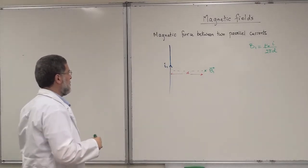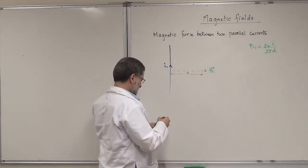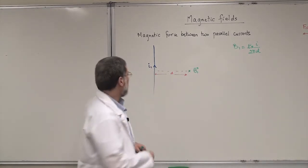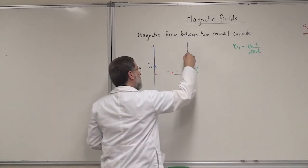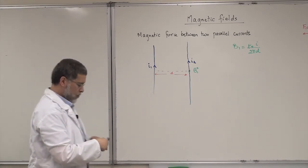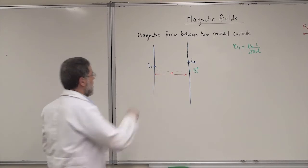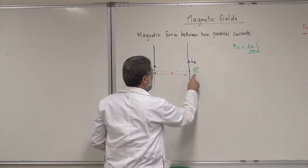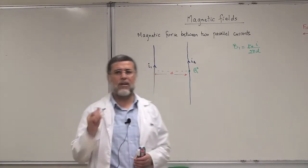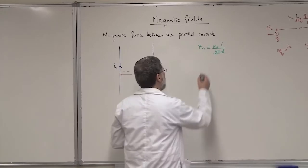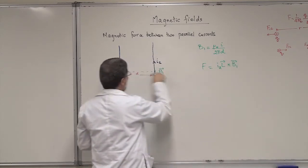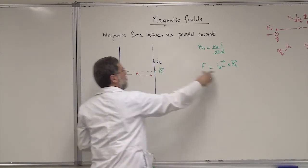Now I'm going to take another wire and place it at that point, with parallel currents — so I pass a current I2 in the same direction. If you recall from previous videos, a wire carrying current I2 in a magnetic field B will experience a magnetic force. The force equation is F equals I2 times L cross B1, where B1 is the magnetic field due to wire 1 and L is the length of wire 2.